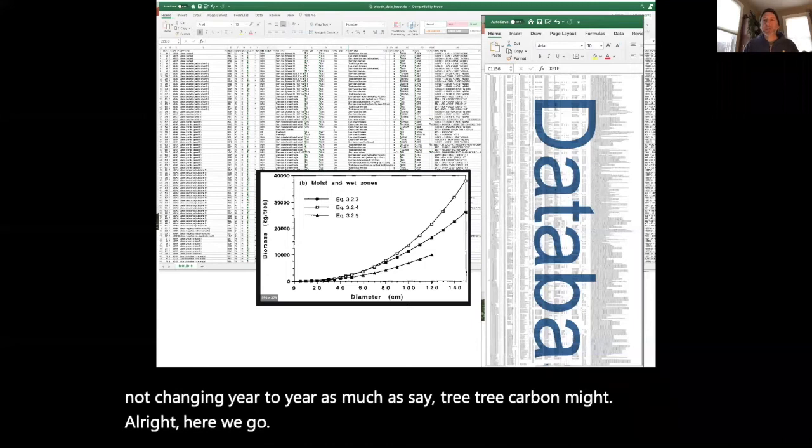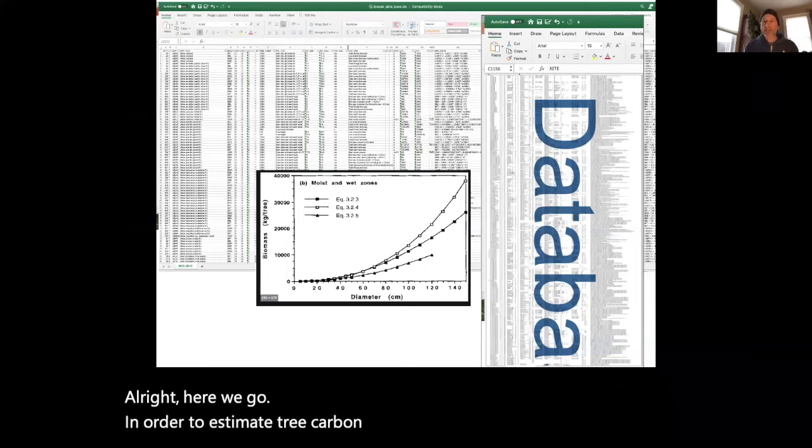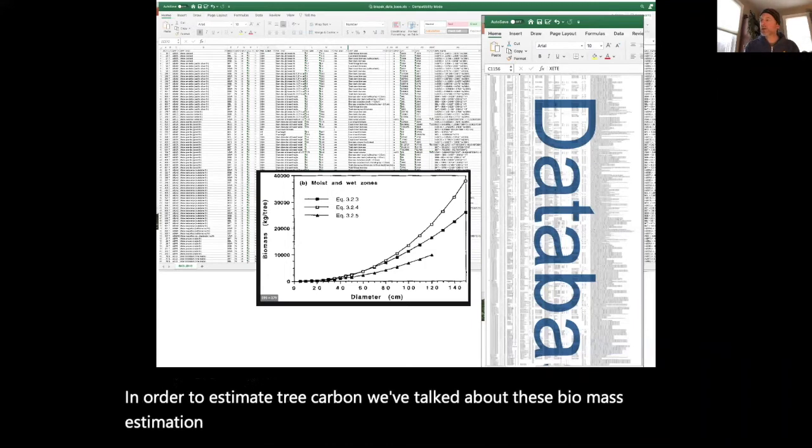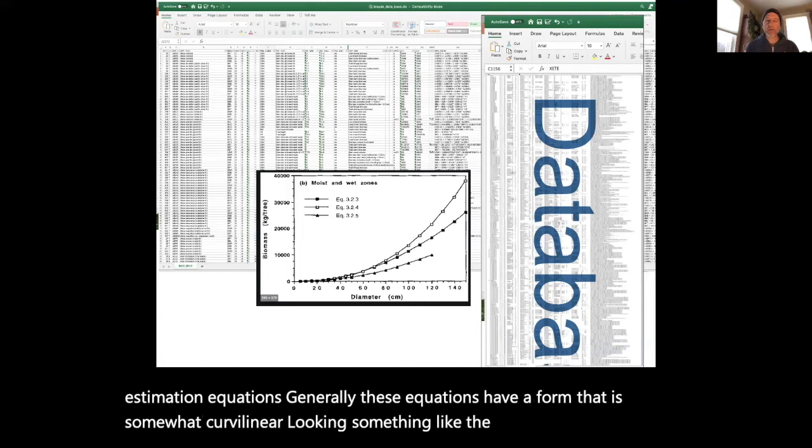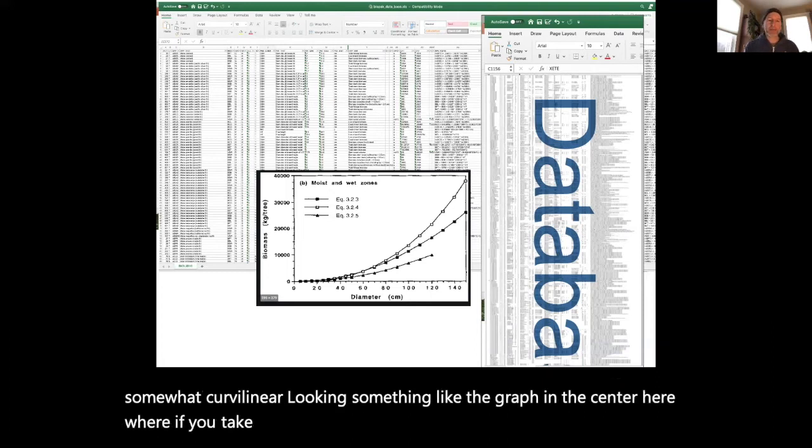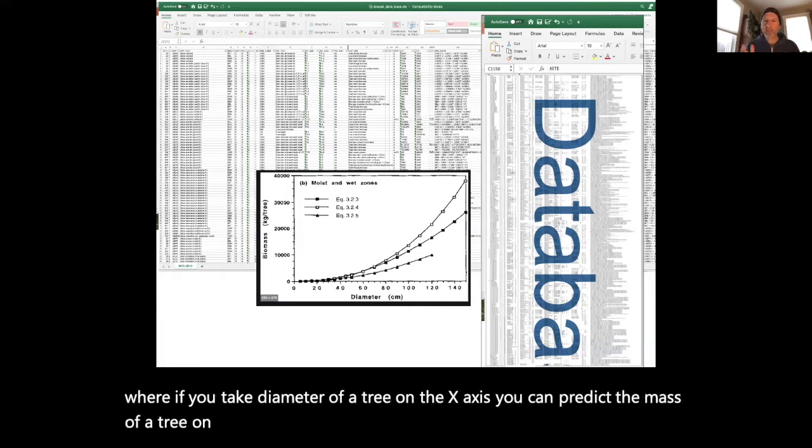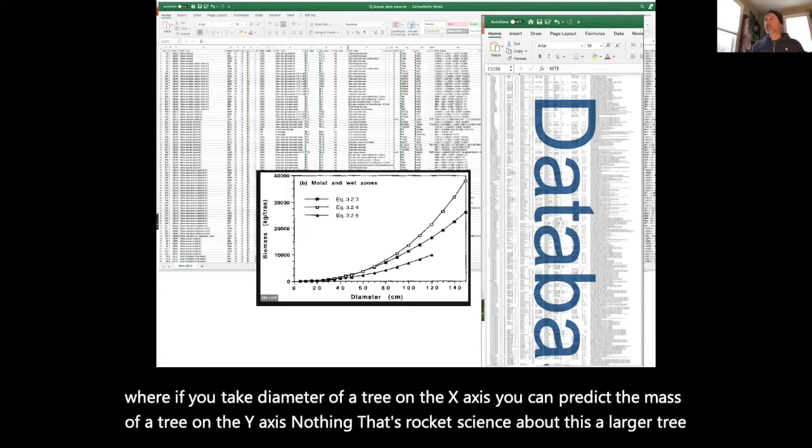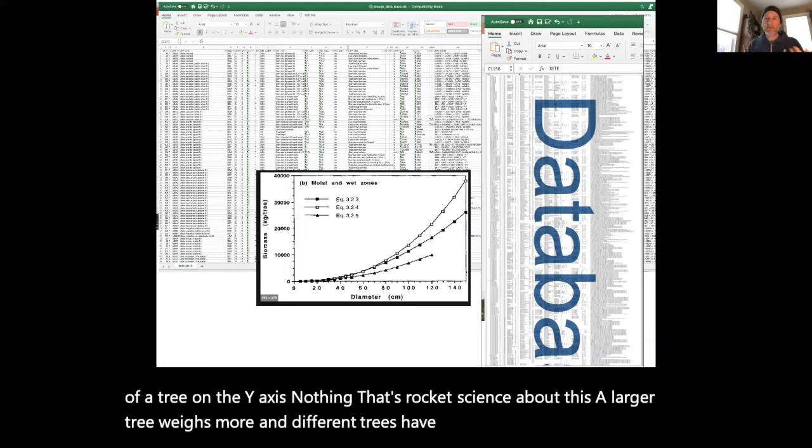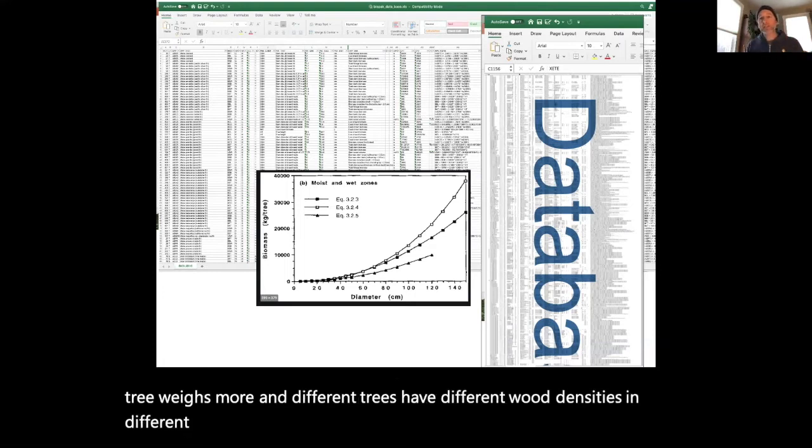In order to estimate tree carbon, we've talked about these biomass estimation equations. Generally, these equations have a form that is somewhat curvilinear, where if you take diameter of a tree on the x-axis, you can predict the mass of a tree on the y-axis. Nothing rocket science about this. A larger tree weighs more and different trees have different wood densities and different properties that make them weigh differently as you increase their size.